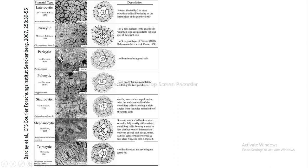Pericytic means only one cell is enclosing both the guard cells. Polocytic means one cell nearly but not completely enclosing both the guard cells — only a portion of the guard cell is not enclosed in the polocytic arrangement. So polocytic can be called a partial pericytic, and the longer axis of the subsidiary cell is again perpendicular to the longer axis of the guard cells.